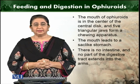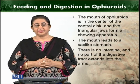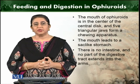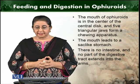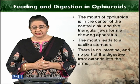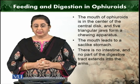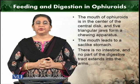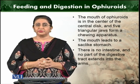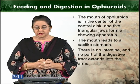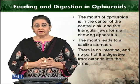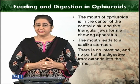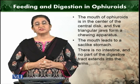The mouth is present in the central disk, and there are five triangular jaws radiating and leading to each arm. These jaws normally form the chewing apparatus. Whatever food is captured is chewed and then pushed into the sac-like stomach.